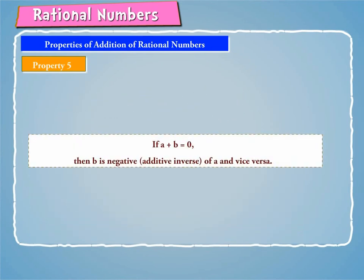Thus, if A + B is equal to 0, then B is the negative or additive inverse of A, and vice versa.